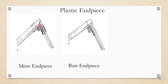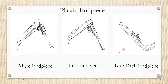The second plastic end piece is the butt end piece, where the angle between the frame front and temple is 90 degrees. The temple sits more inward toward the frame front compared to the mitre end piece. The third type is the turn back end piece, where the frame front and temple form a 180-degree angle — a straight line. The frame front is bent back and the temple attaches straight onto it.